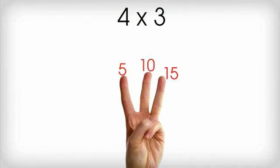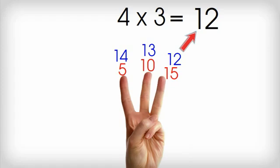Now we're going to count backwards three times. So we left off at fifteen. Fourteen, thirteen, twelve. That's it. Four times three is twelve.